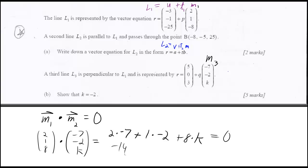So let's simplify this, and that's negative 14 minus 2 plus 8k is equal to 0. So 8k would have to equal 16.